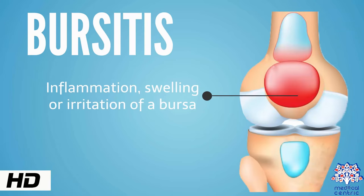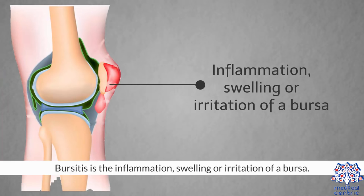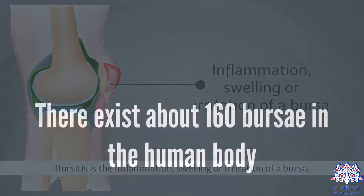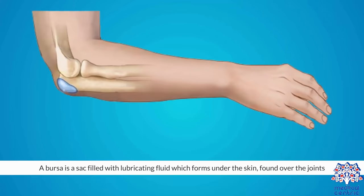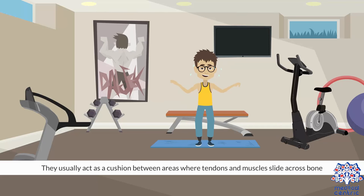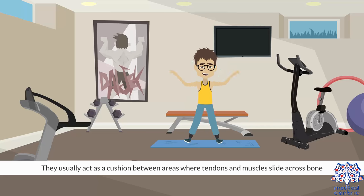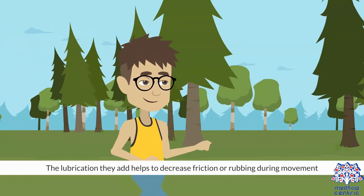Today's topic is bursitis. Bursitis is the inflammation, swelling, or irritation of a bursa. There exist about 160 bursae in the human body. A bursa is a sac filled with lubricating fluid, which forms under the skin, found over the joints. They usually act as a cushion between areas where tendons and muscles slide across bone. The lubrication they add helps to decrease friction or rubbing during movement.